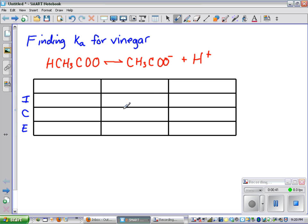These are the initial conditions of each of the species. These are the change of each of the species from product to reactant, or reactant to product, and this is the equilibrium condition of the species after it's already equalized as a system.